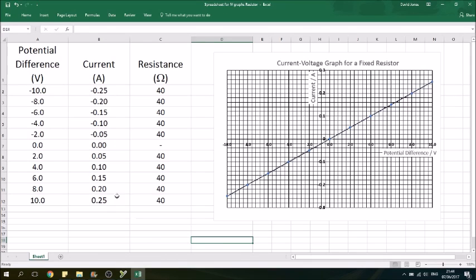Okay, so here's the analysis of our data. Here's our potential differences going from minus 10 volts up to plus 10 volts. Here are values for the current through the resistor with these different potential differences. And over here we've got the graph. So you'll notice we've got potential difference on the x axis, current on the y axis.